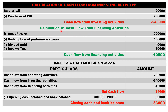Cash flow from financing activity: issue of shares two lakh, less redemption of preference shares one lakh, less dividend paid forty thousand — resulting in a net inflow of plus sixty thousand, indicating cash inflow from financing activity.